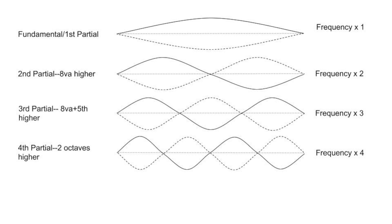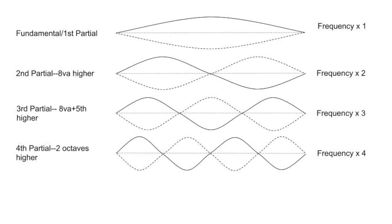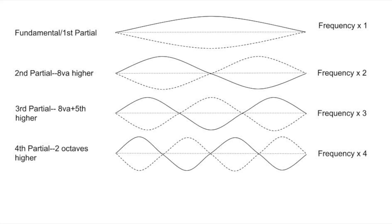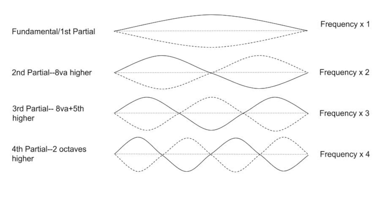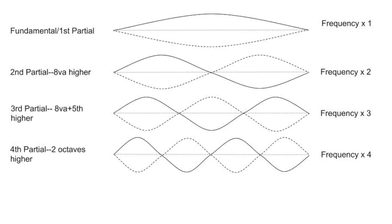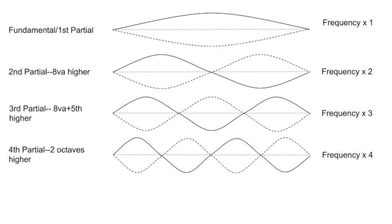The first one we refer to as the first partial, and it's actually the fundamental pitch as well. You can see from this diagram, which is a simplified representation, that it kind of looks like a jump rope shape. The string is vibrating as a whole.